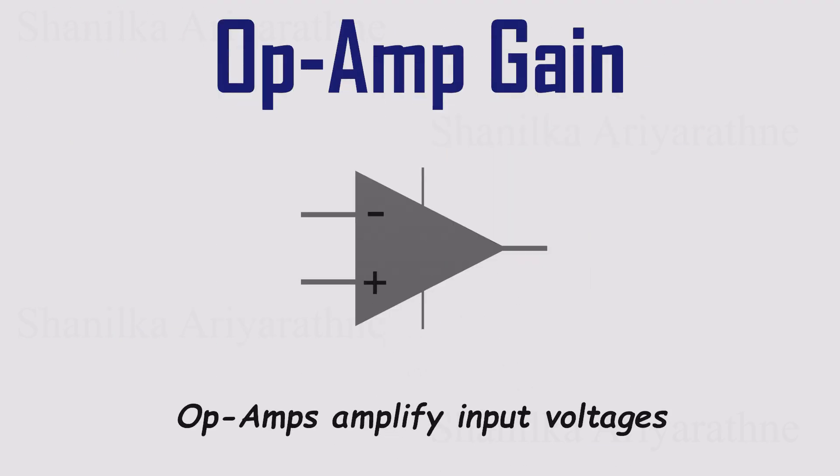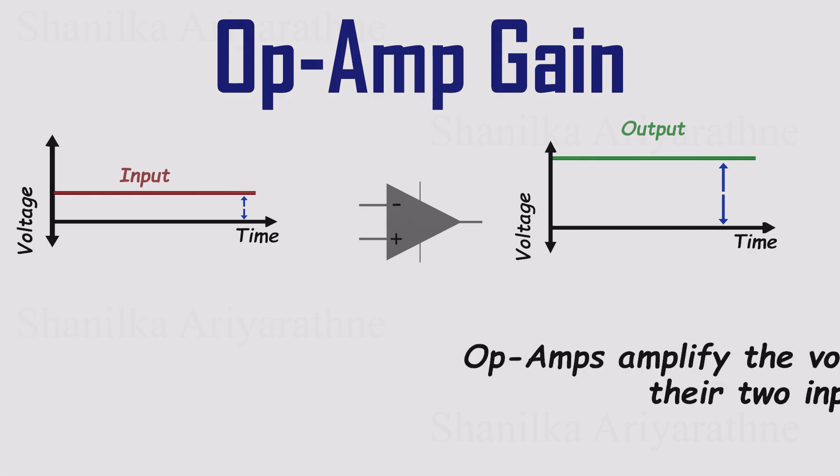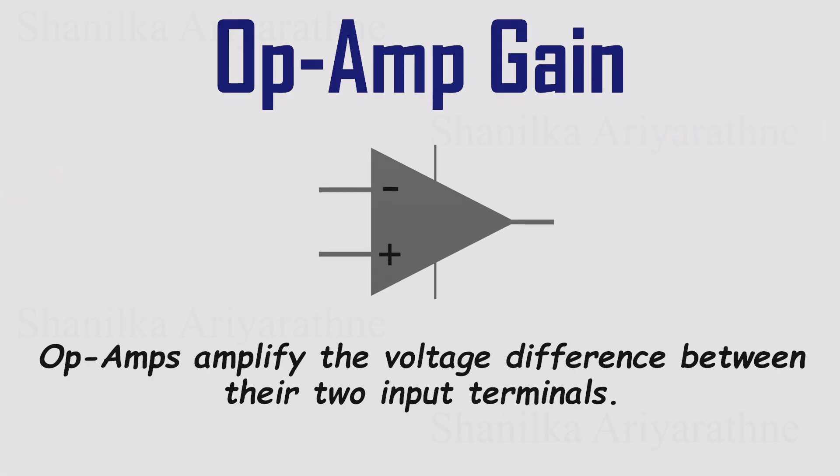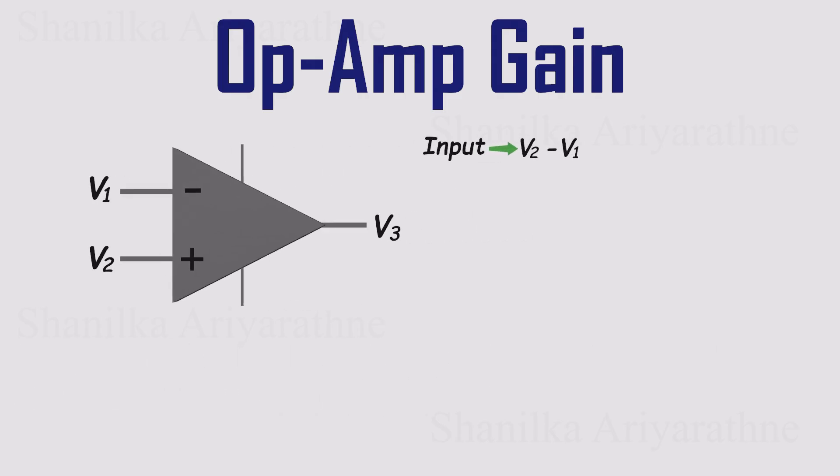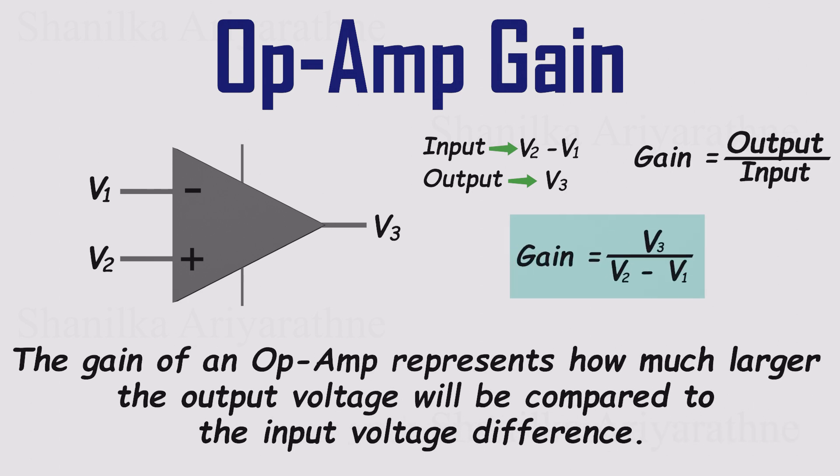And now for the most important feature of all: gain. An op-amp gets its name because it amplifies, and what it amplifies is the voltage difference between its two inputs. If the inputs are V1 and V2, the op-amp multiplies their difference, V2 minus V1, to create the output. This idea of gain is central to everything an op-amp does, and the actual gain you get depends entirely on how the op-amp is wired into the circuit.